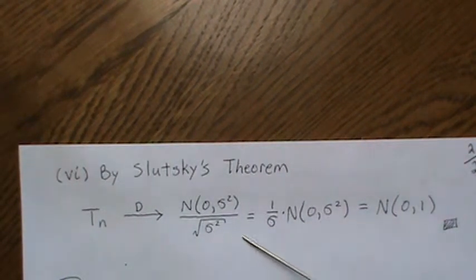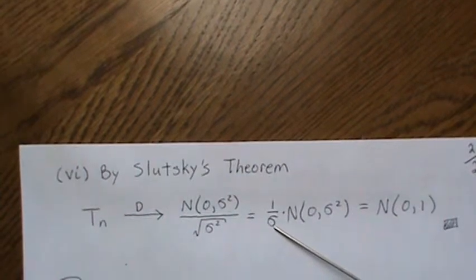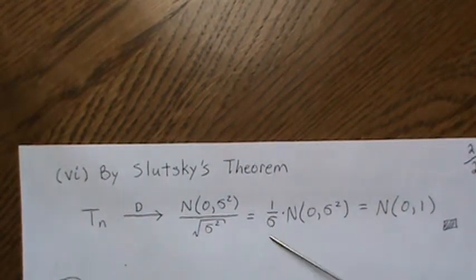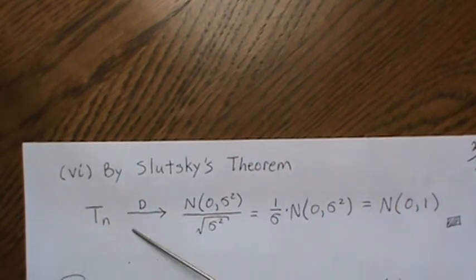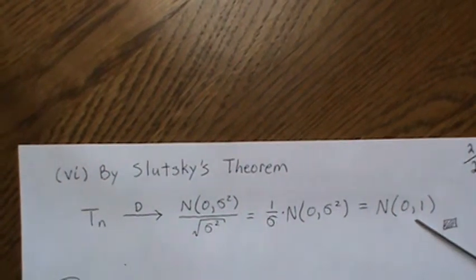The square root of sigma squared is 1 over sigma, so when you take it in you have to square it. Sigma squared over sigma squared is 1, so the t statistic does limit to a standard normal distribution.